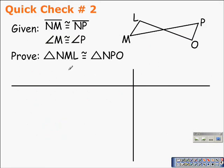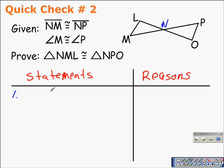Another proof—lots of proofs in geometry! Given that segment NM is congruent to segment NP and angle M is congruent to angle P, prove that triangle NML is congruent to triangle NPO. Let's write our first statement, which is our given: segment NM is congruent to segment NP and angle M is congruent to angle P. We've already marked those on our diagram.